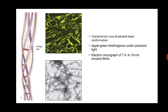The characteristic physical nature of amyloid fibrillar proteins is a beta-pleated sheet structure. The Congo red stain deposits within these beta-pleated sheets, giving rise to apple green birefringence under polarized light. Under electron microscopy, the fibrillary proteins are 7.5 to 10 nanometers in diameter.